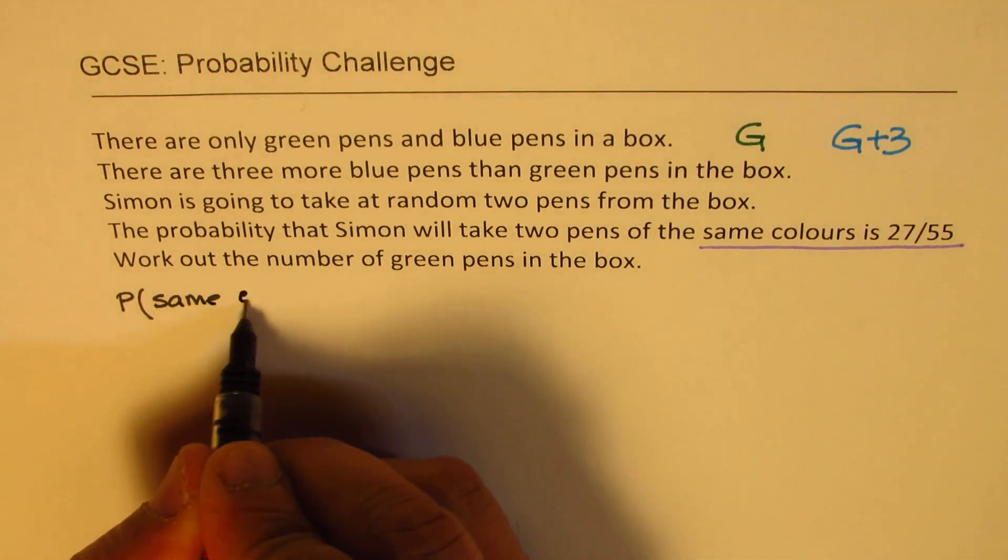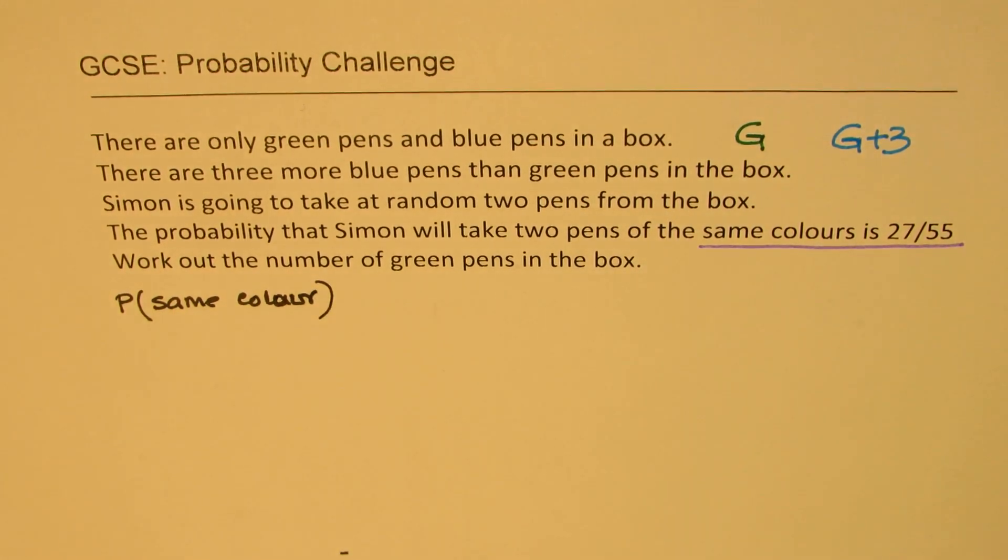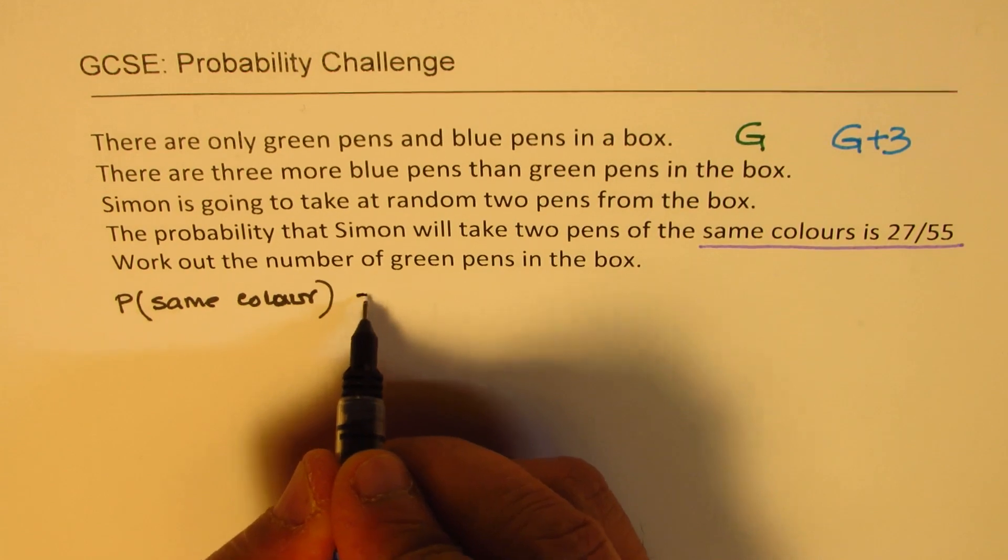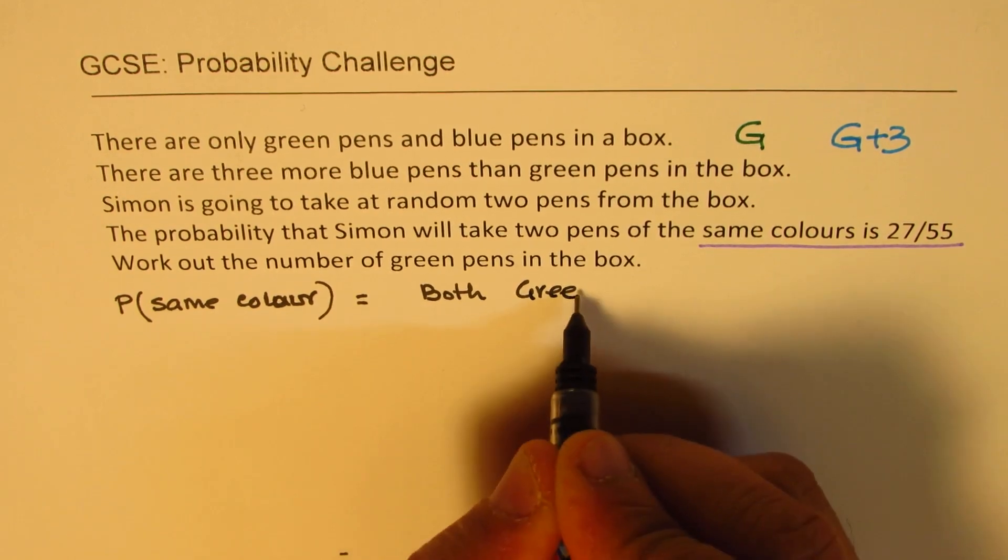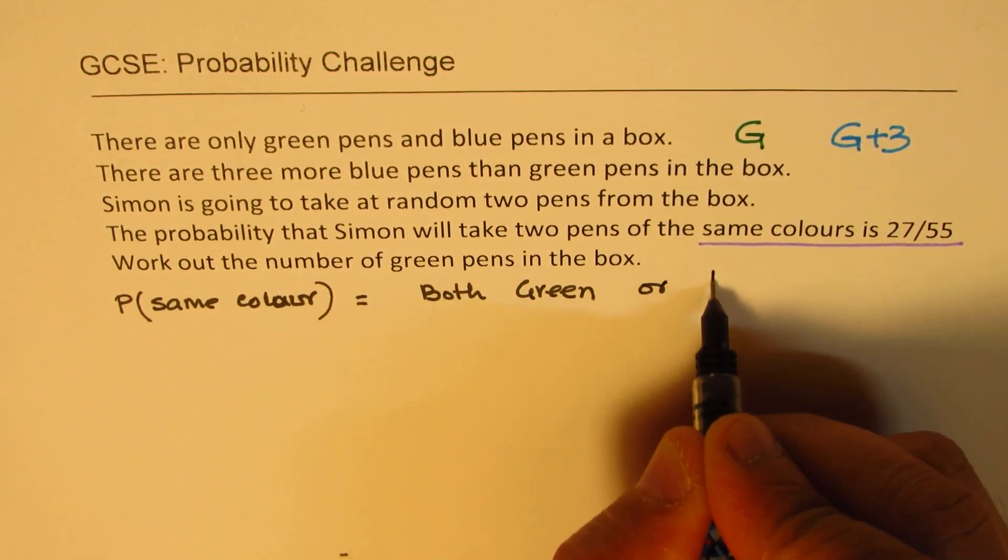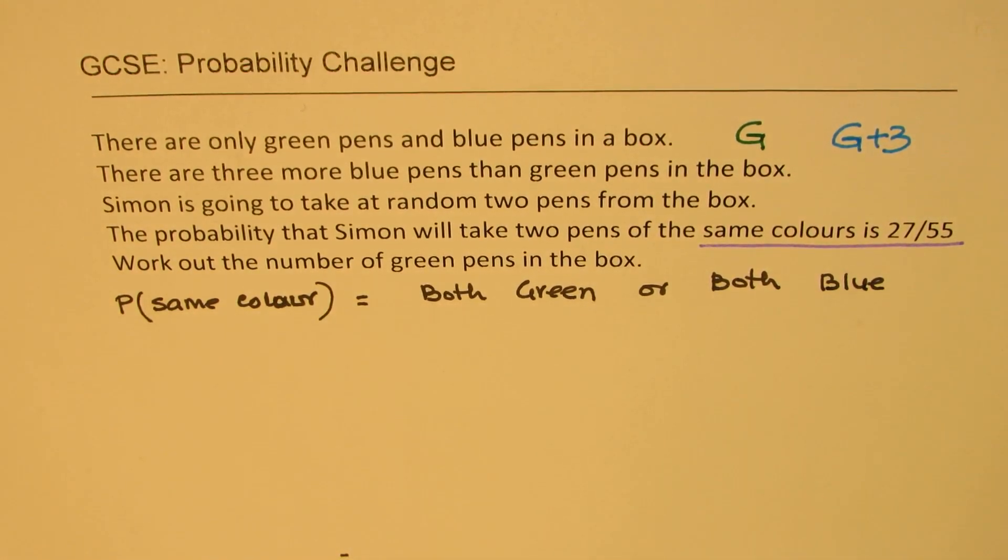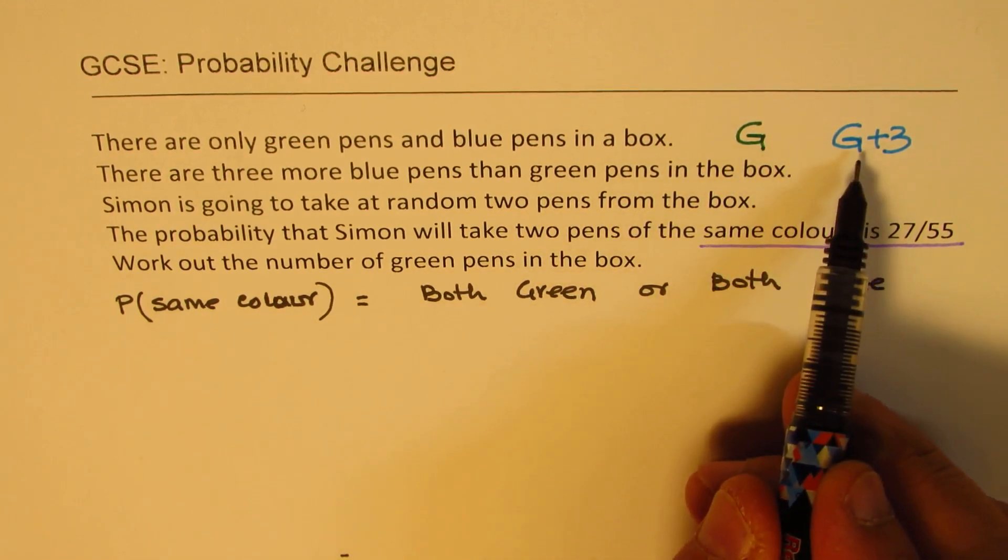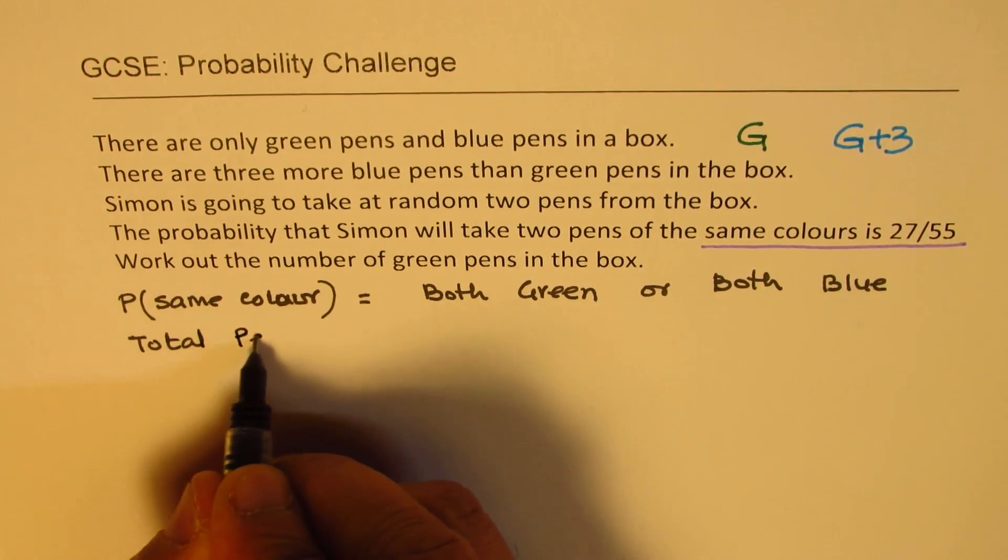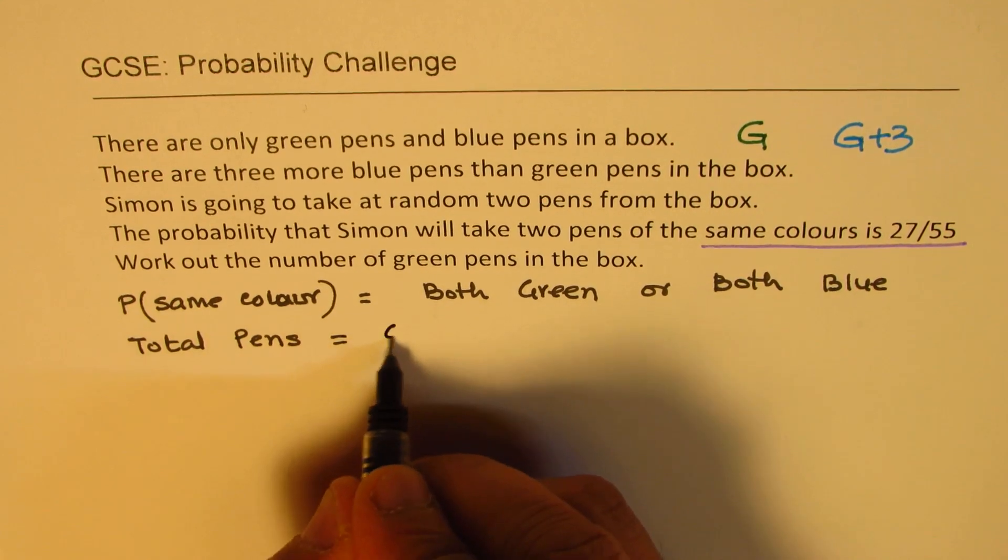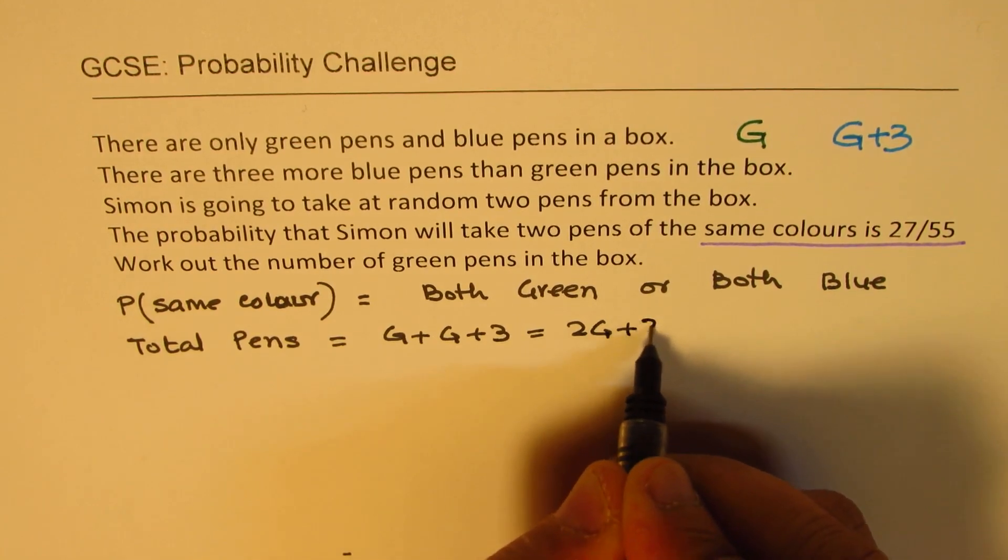When we say probability of the same color, it could be both green or both blue. We know number of green pens are G. Number of blue pens are G plus three. Total number of pens are G plus G plus three, which gives us 2G plus three.